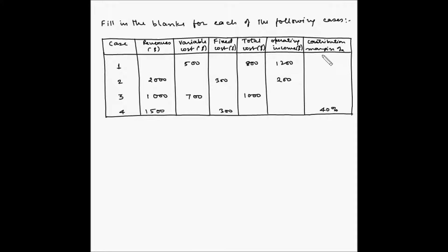There is also a contribution margin percent column. There is a correlation between many of these terms: variable cost plus fixed cost is total cost, and revenue minus the total cost is operating income. Contribution margin percent is the contribution margin divided by the revenue, and contribution margin equals revenue minus variable cost.